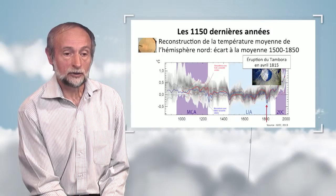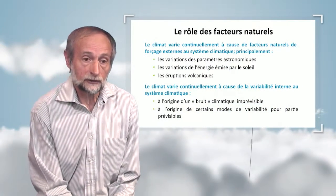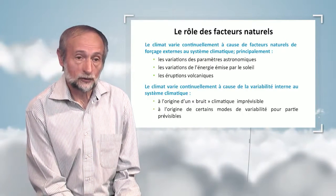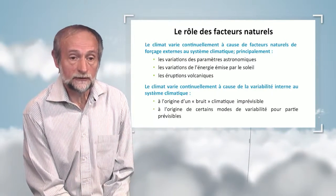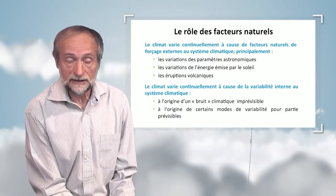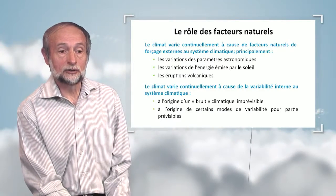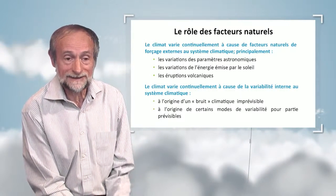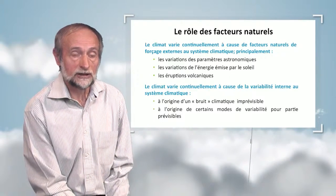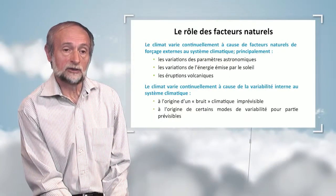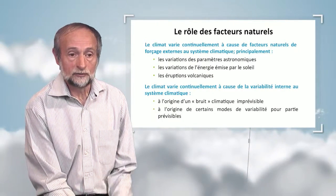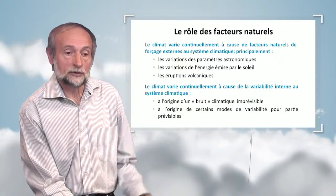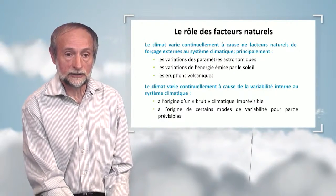To summarize natural influences: first, astronomical parameter variations over timescales in excess of 10,000 years; second, variations in the energy released by the Sun that change the climate over centuries or decades; and finally, volcanic eruptions that change the climate for a few years — about two years for major eruptions such as Pinatubo — but also for longer periods if there is a change in the frequency of eruptions.